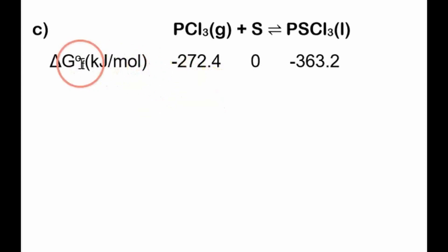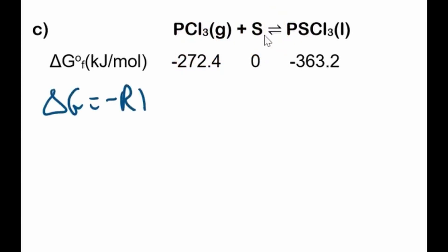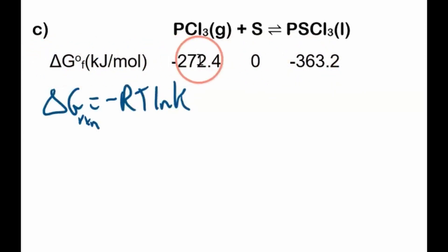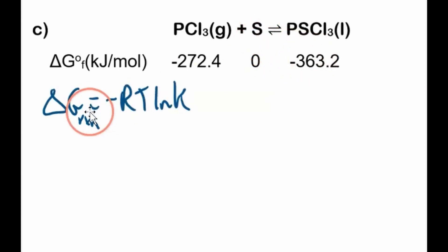For the next problem we again want to calculate K, but we're given different data: a chemical equation and the standard Gibbs free energy of formation values for the reactants and product. To calculate K we still need ΔG° for the reaction. These ΔG°f values represent the Gibbs free energy change when each species is formed from raw elements, and it's zero for elements in their reference state.